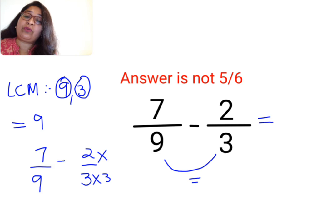Same thing will happen in the numerator as well. Please understand, whatever operation you perform on your denominator is the same operation which you should be doing in your numerator as well. So now this question has changed to what? 7 upon 9 minus 6. 2 multiplied by 3 is 6 upon 9.